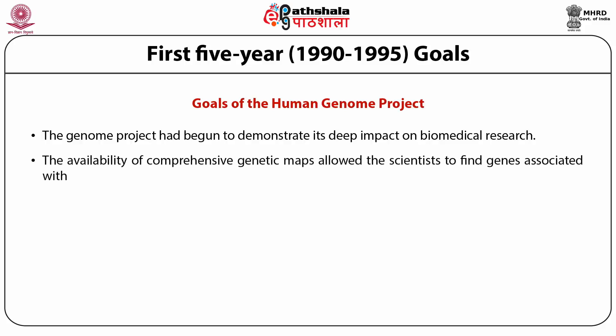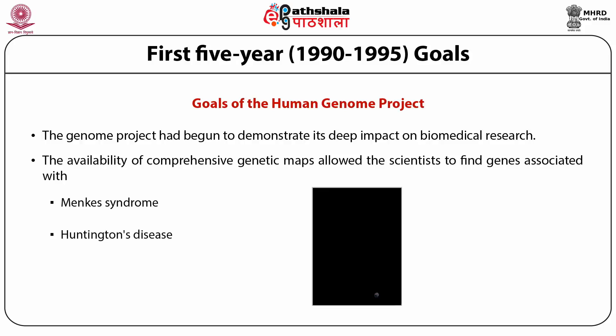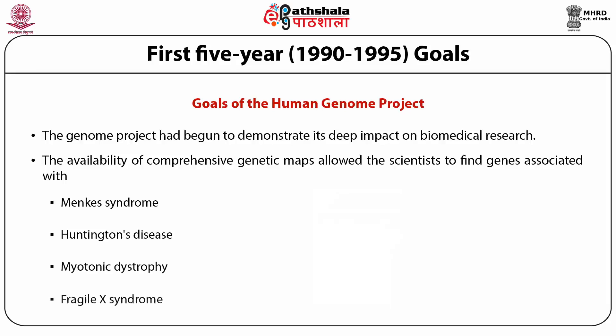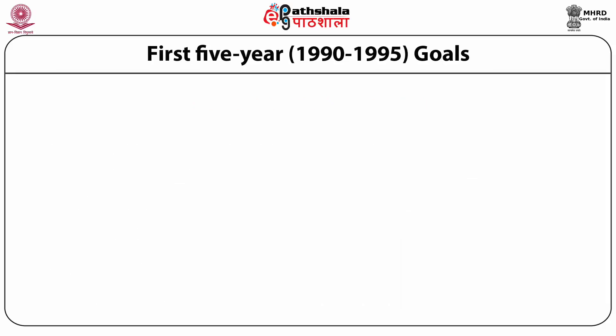There was improvement in DNA sequencing and bioinformatics, and identification of major ethical, legal and social issues associated with increased availability of genetic information. The Genome Project had begun to demonstrate its deep impact on biomedical research. The availability of comprehensive genetic maps allowed scientists to find genes associated with Menkes Syndrome, Huntington's Disease, Myotonic Dystrophy and Fragile X Syndrome. The first goal involved mapping and sequencing the human genome, which included genetic mapping, physical mapping and DNA sequencing.